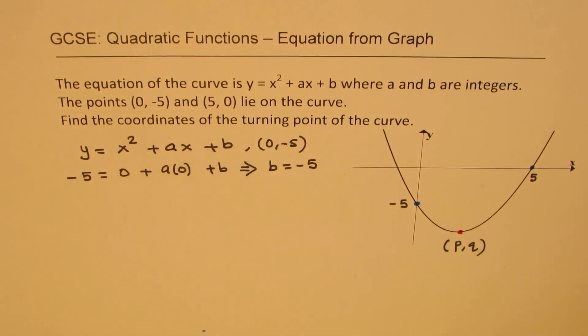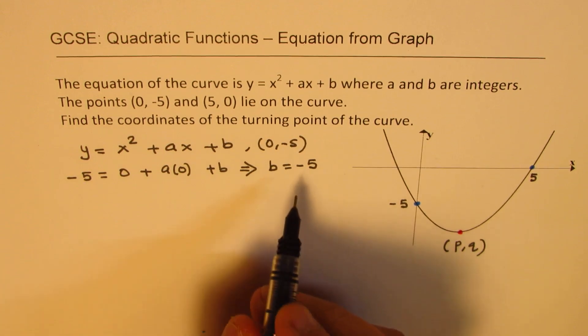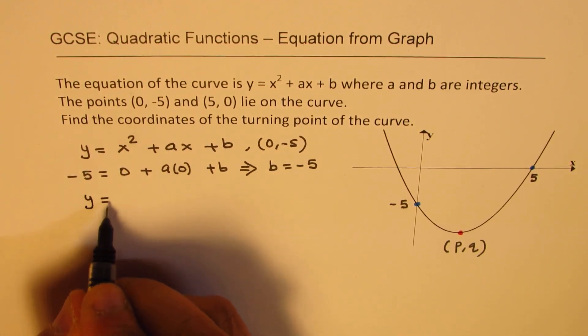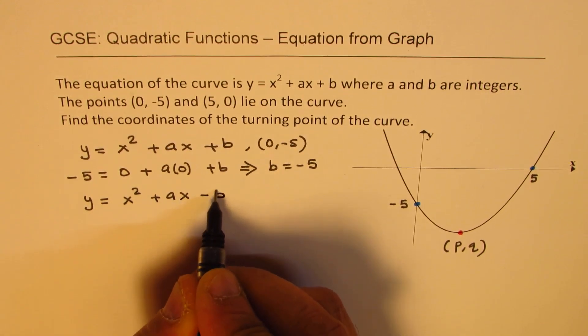So we got one of those parameters. The other one we'll find by substituting the second point. Now we can place b as -5, so we get equation y equals x squared plus ax minus 5.